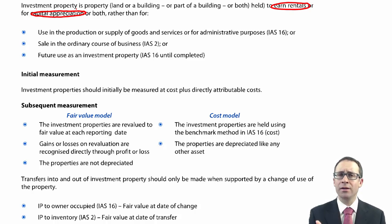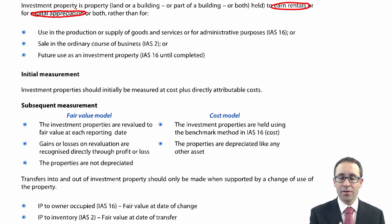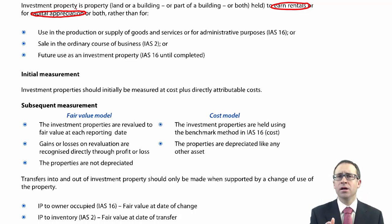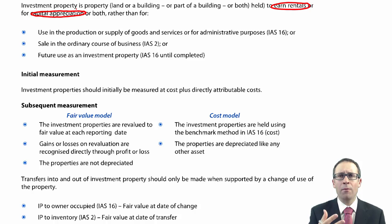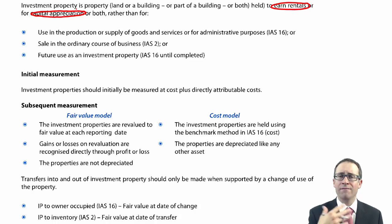It's also not land and buildings that you're looking to sell in the ordinary course of business — for example if you are a house construction business, that would fall under IAS 2 rather than investment property.